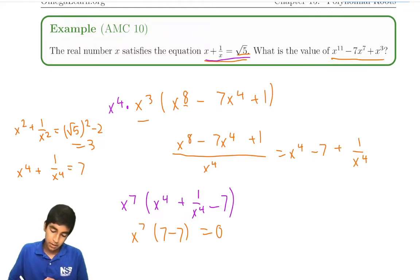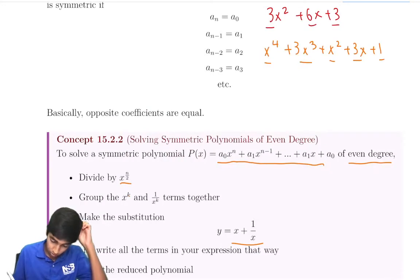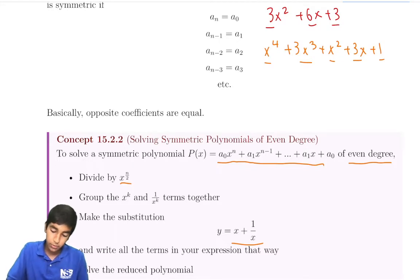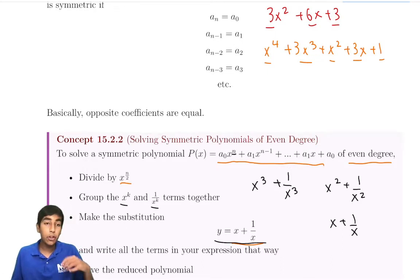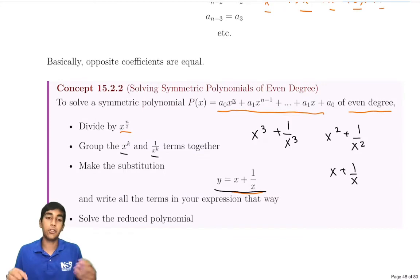That is it for this problem. So, going back to here, essentially to solve any symmetric polynomial, all we do is divide by half of the power of the largest coefficient, and then we group terms like this. So x³ + 1/x³, for example, and x² + 1/x², or even just x + 1/x. We make the substitution, and then we just rewrite our polynomial. The advantage is now our polynomial is of less degree, much easier to solve.